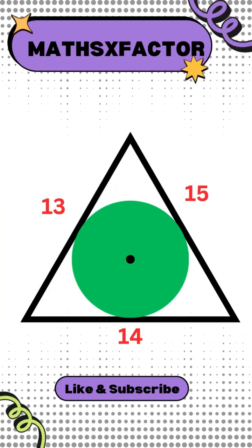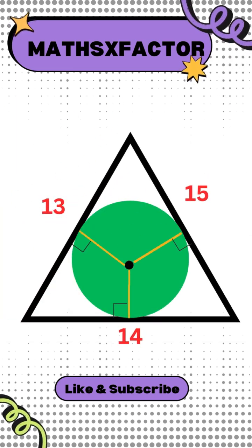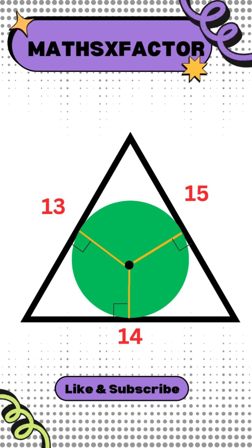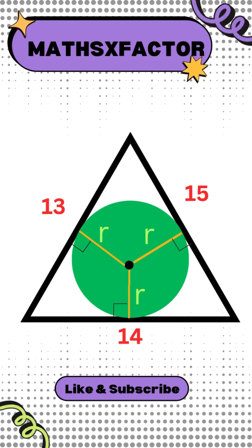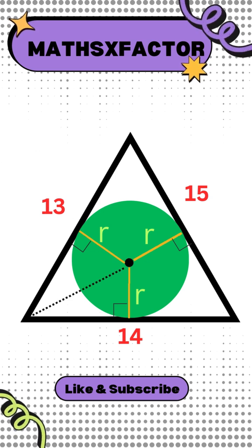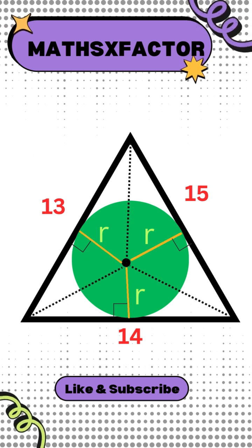Look at the center of the circle. Draw a perpendicular line from the center of the circle. These lines also represent the radius of the circle, so label it as R. And also connect the vertices of the triangle with the center of the circle.